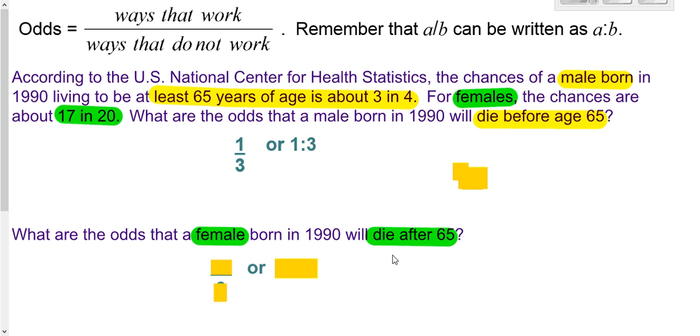Looking at the second one down here, same given information, but we want to know what are the odds that a female born in 1990 will die after age 65.